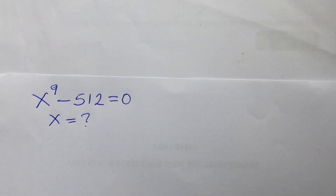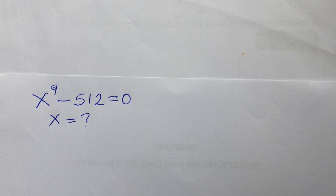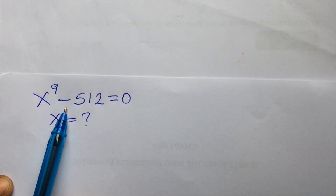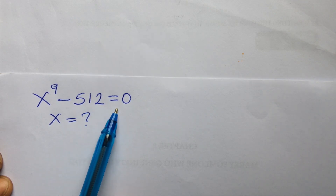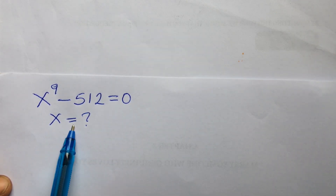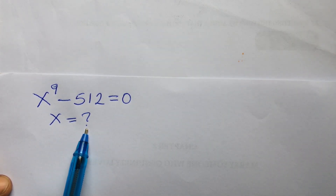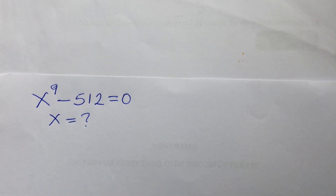Welcome, this is All Live Mass TV where we learn mathematics every day. Today we have a ninth degree polynomial equation: x to the power of nine minus 512 equal to zero. We are asked to find all the roots of x — in other words, we have to solve for both the real root and the imaginary root.